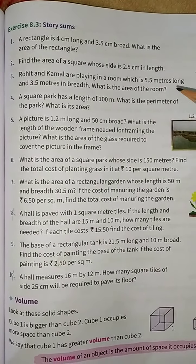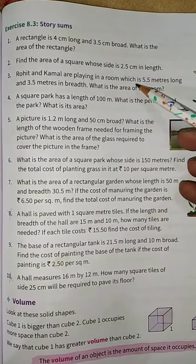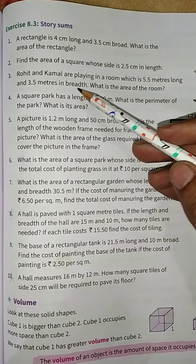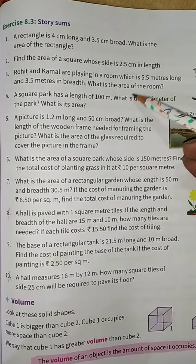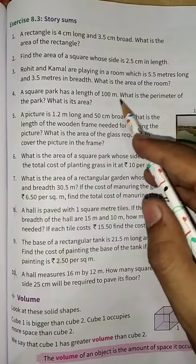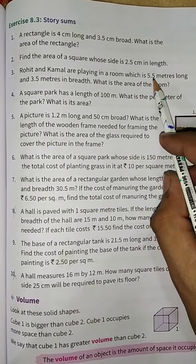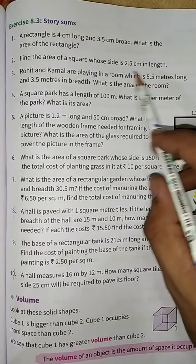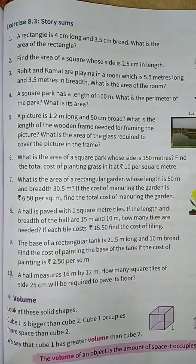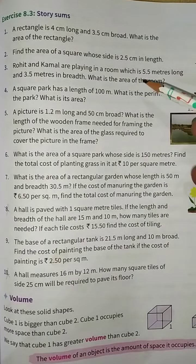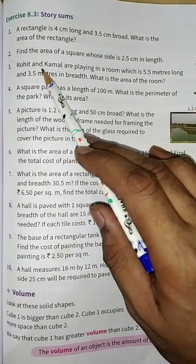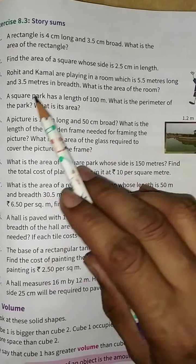Third question: Rohit and Kamal are playing in a room which is 5.5 meters long and 3.5 meters in breadth. What is the area of the room? The room is in rectangular shape. The length is 5.5 meter and breadth is 3.5 meter. To find the area, we will use the formula length into breadth, means 5.5 into 3.5. You can do this yourself.